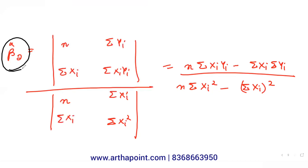Therefore, we have derived the optimal values of β1 hat and β2 hat. These values minimize the sum of the squared errors, and therefore they are the optimal values. Let's move on to the next slide.